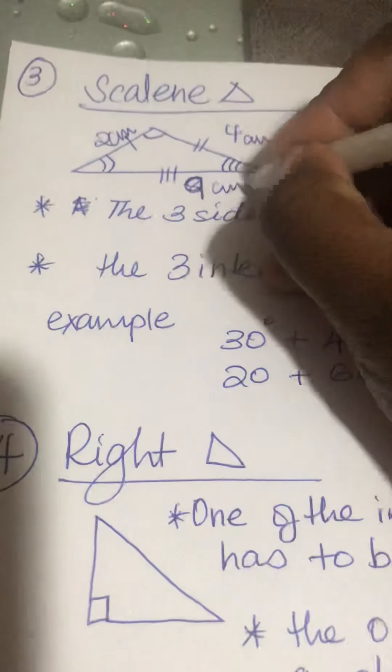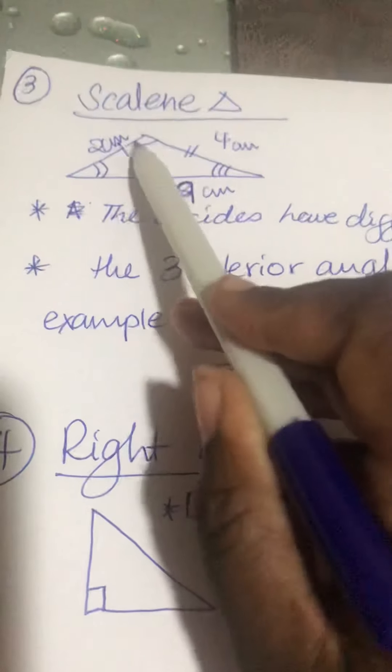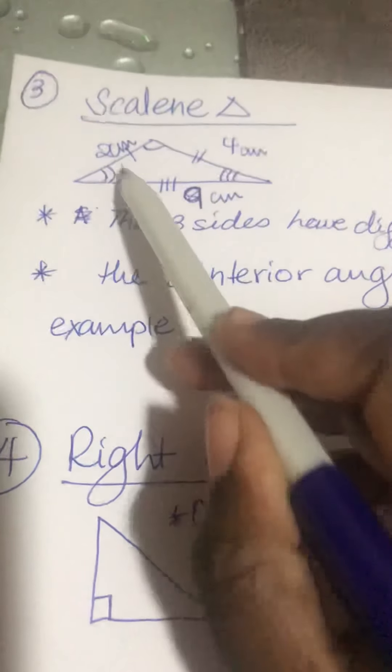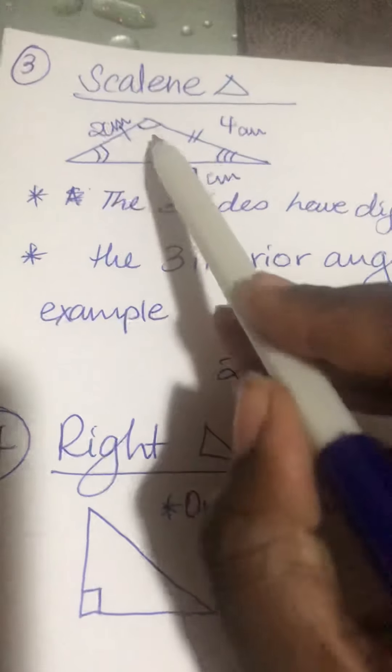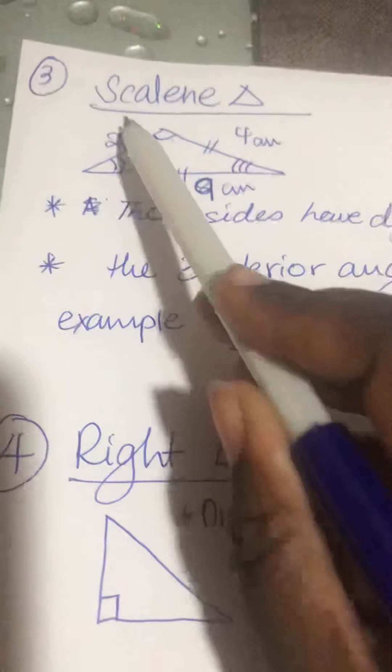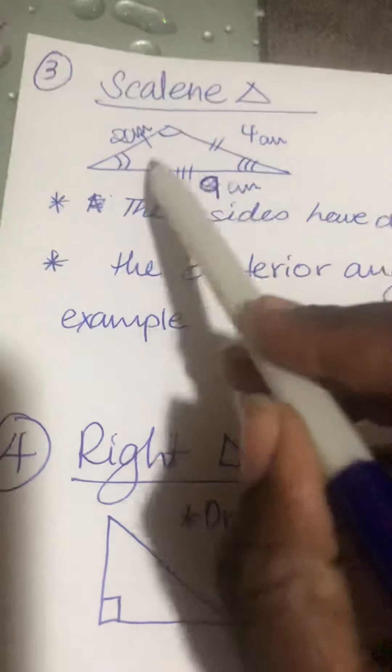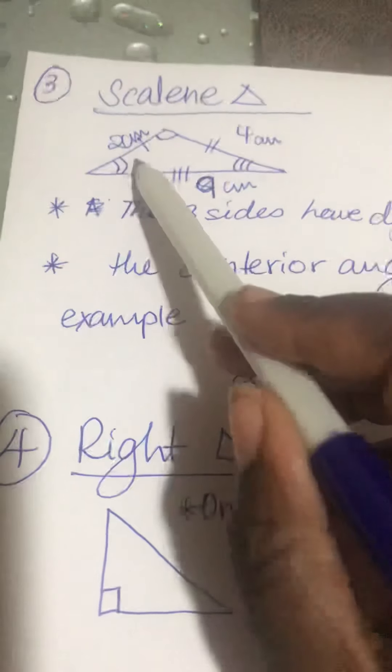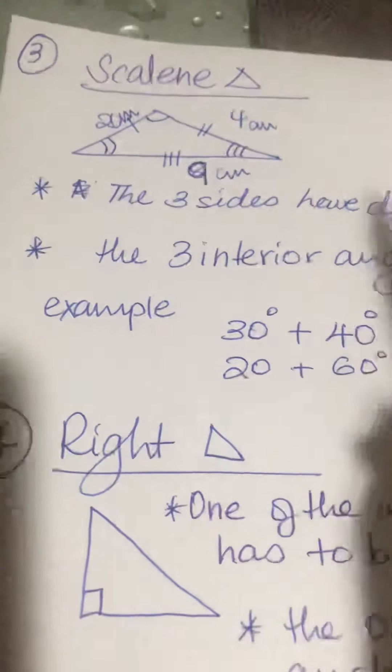If the sides are not the same, the angles inside will also not be the same. So because this is 2, 4, and 9, the sides are not the same, these angles are also going to be different. You can't have 30, 30, and 40—no, all three will be different.